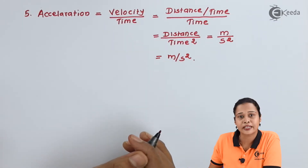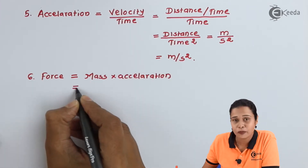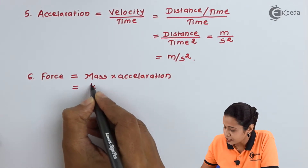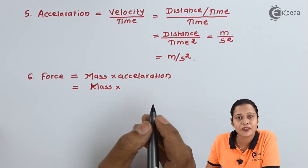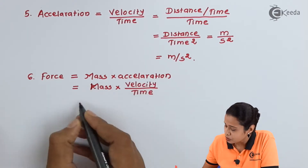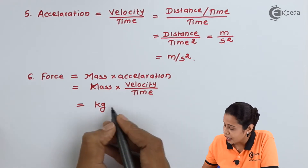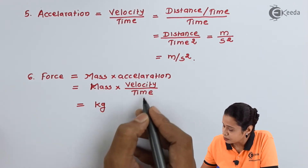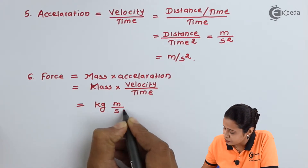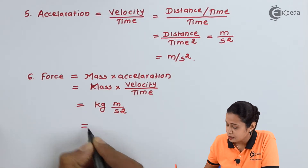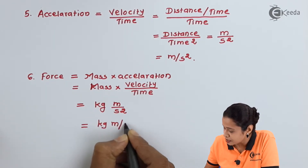The next quantity we will take is force. We know force is equal to mass into acceleration. The unit of mass is kilogram, and acceleration is velocity per unit time, which gives meter per second square. Hence the unit of force is kilogram meter per second square.